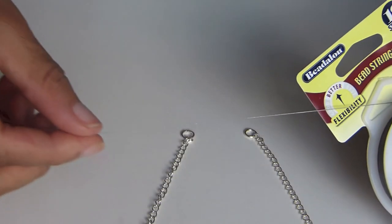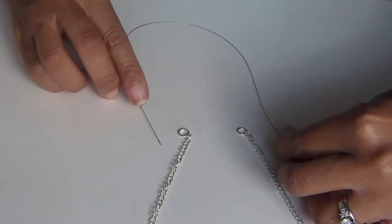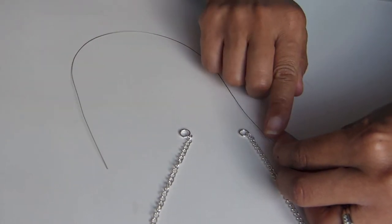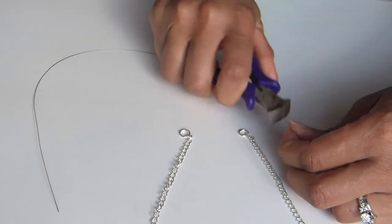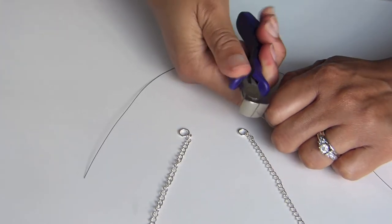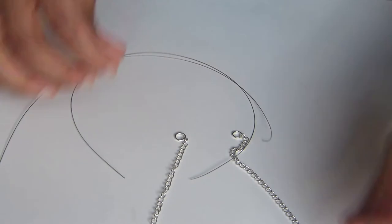Close the jump ring and now we're going to start with the beading wire. You want to measure it to the length that you would like the necklace to be because this is where the beads will be. You're going to cut at that marked location that you decided upon and you're going to do this two times, so you need two pieces of wire.